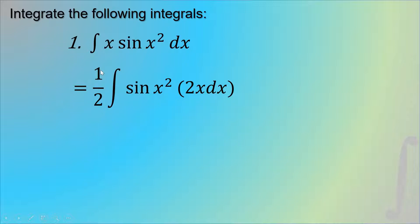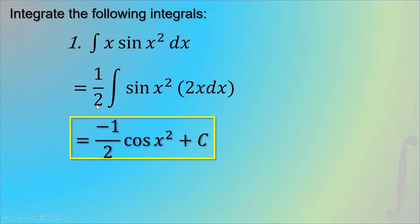We are going to balance our integral by putting one-half outside the integral sign. Then proceeding with integration, the integral of sin is negative cosine. We copy our u, which is x², and apply the negative sign. So the result is negative one-half cos(x²) plus C.